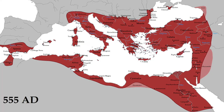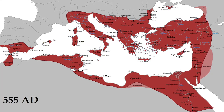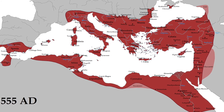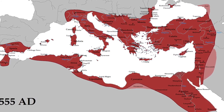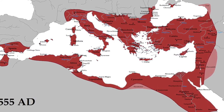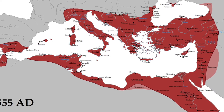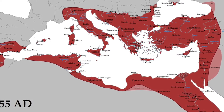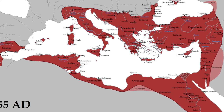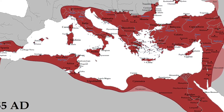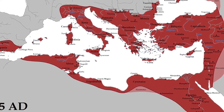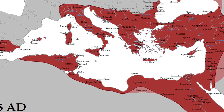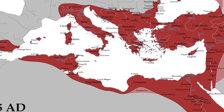The plague dented Justinian's plans of recovering the lost provinces of the Roman Empire in the western Mediterranean. After reconquering much of Italy, northern Africa, and southern Iberia from the Ostrogoths, Vandals, and Visigoths respectively, the plague led to a decline in the power of the Eastern Roman Empire. That decline was confirmed with the emergence a century later of Islam and the conquering of most of the eastern provinces of the weakened empire.